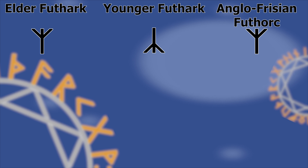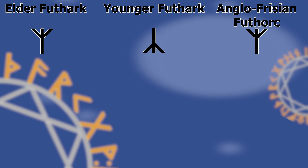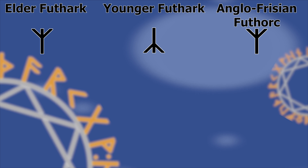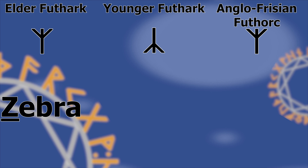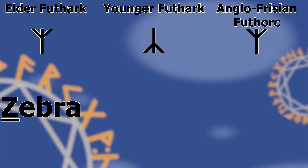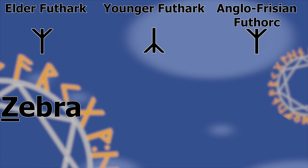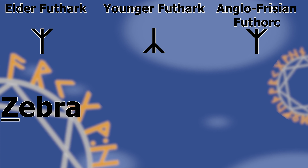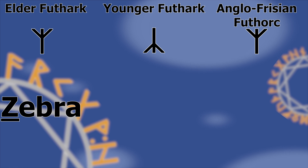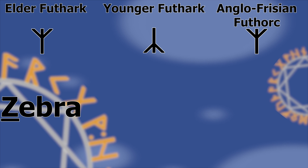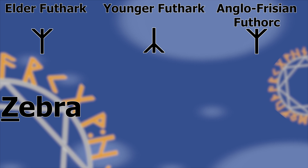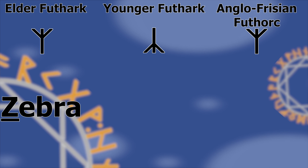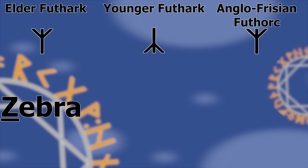In Old Germanic, this rune represented the zh sound, as in the modern English zebra, which was common on the end of words in Old Germanic. You may have noticed it on the end of reconstructed rune names, but in Old English and Old Norse, this noun ending was no longer used, so the rune no longer served a practical purpose.